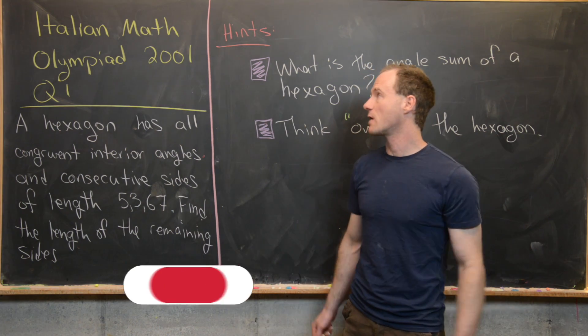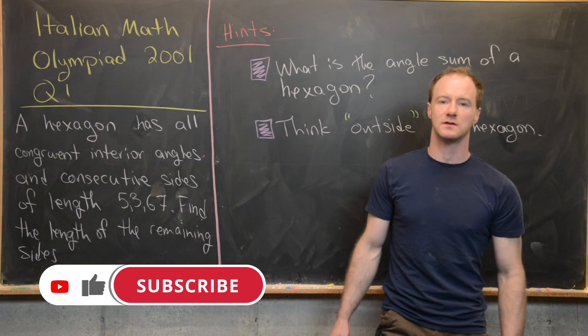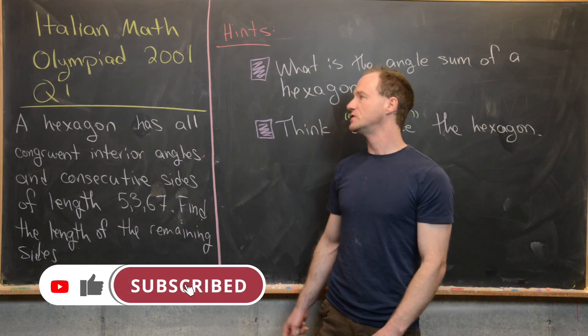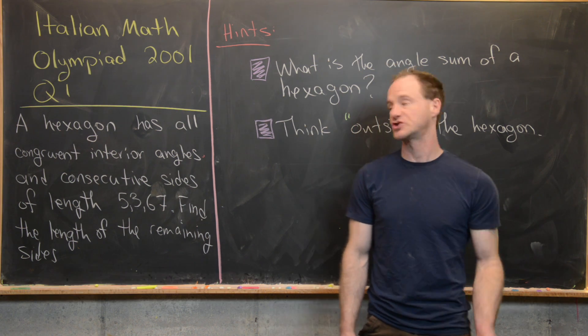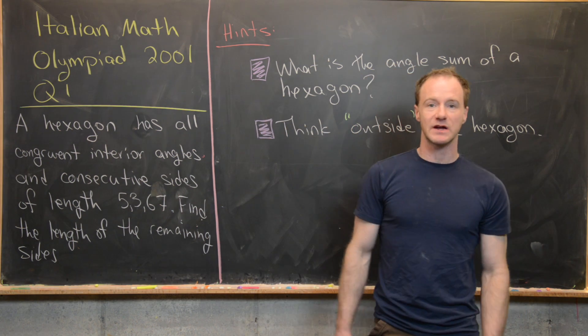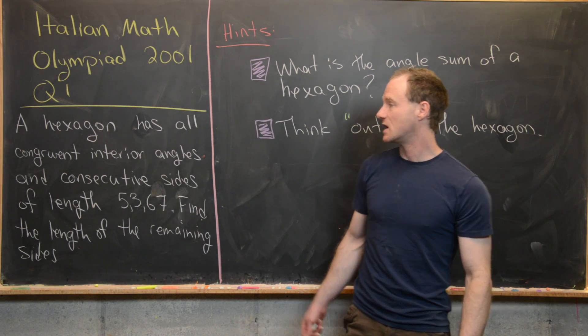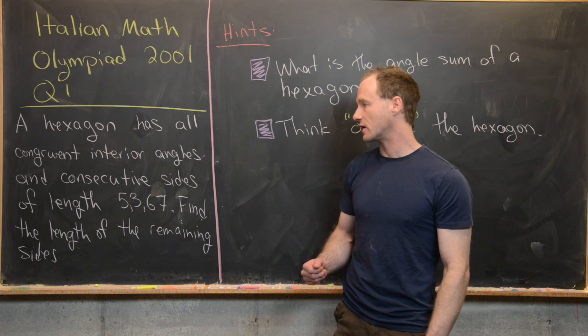Here we're going to look at a nice little geometry problem from the Italian Mathematical Olympiad. This is from the year 2001 and it is question one. The statement goes like this: a hexagon has all congruent interior angles